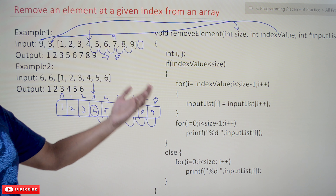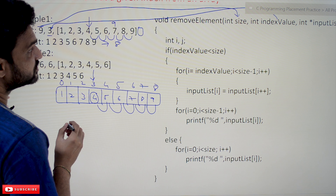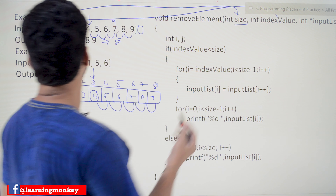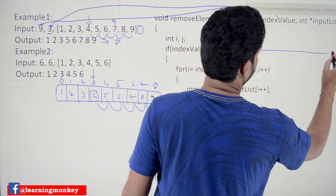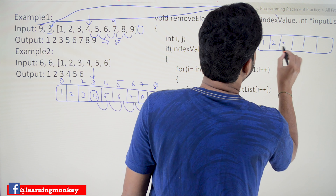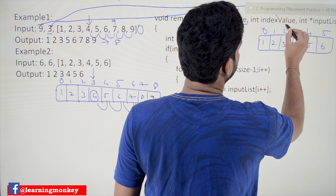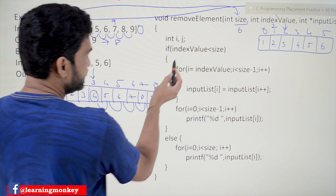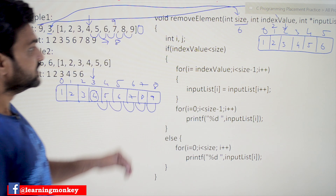Let's verify the program line by line. We'll use a smaller array with six elements, and assume we want to remove the element at index 2. The index value is 2, size is 6, and i and j are the two variables declared. Nothing wrong in this declaration so far.